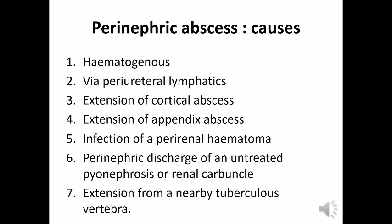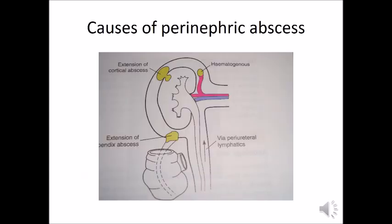Perinephric abscess causes include hematogenous spread, via periureter lymphatics, extension of a cortical abscess, extension of an appendicular abscess, infection from a perinephric discharge, untreated pyonephrosis, renal carbuncle, or extension from a nearby tuberculous vertebra.